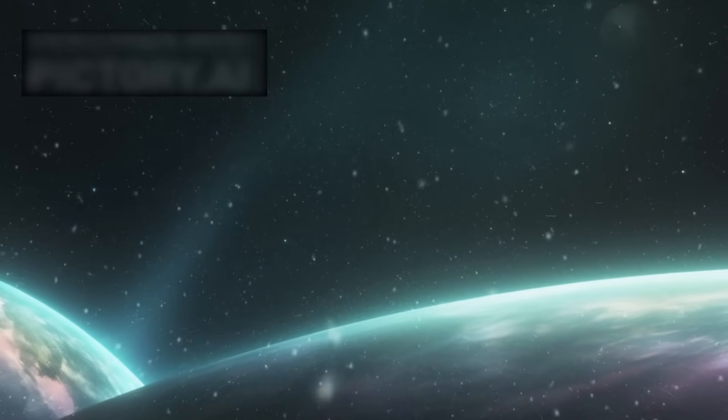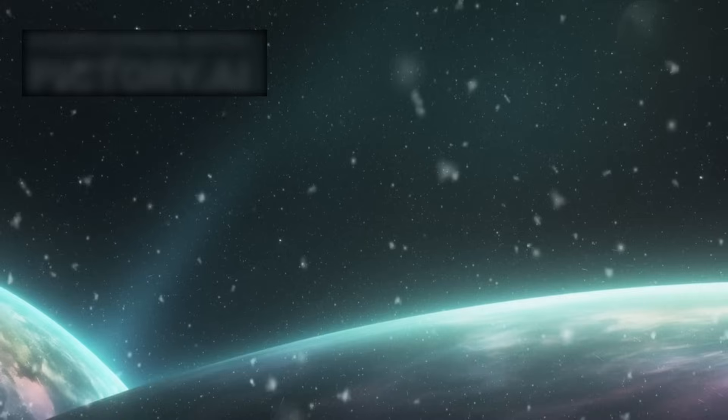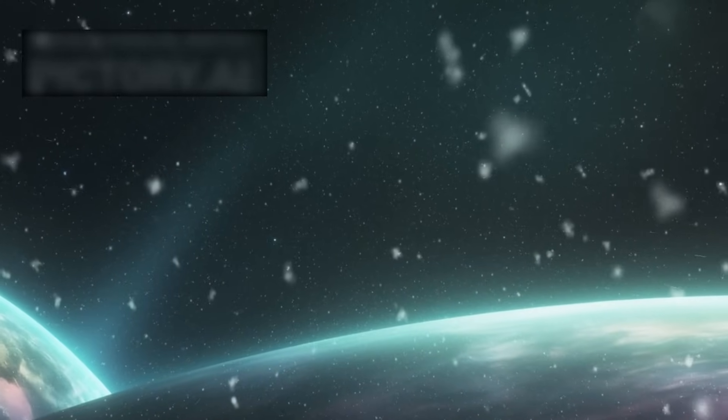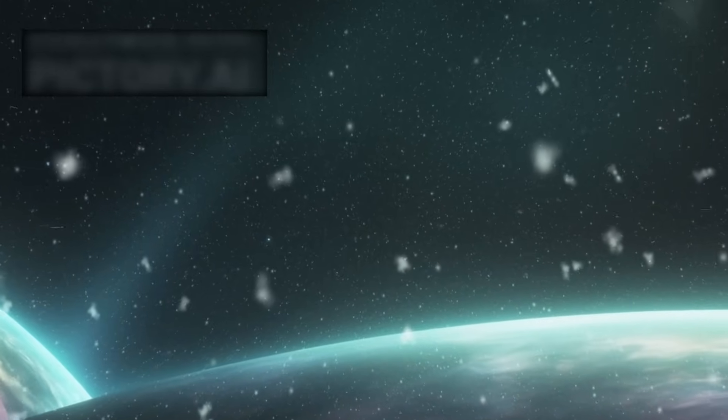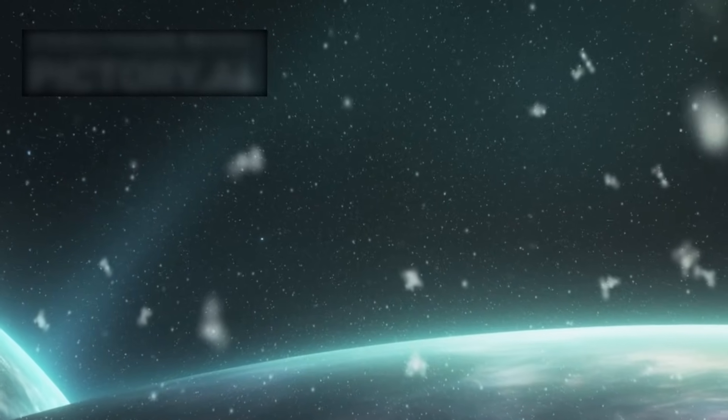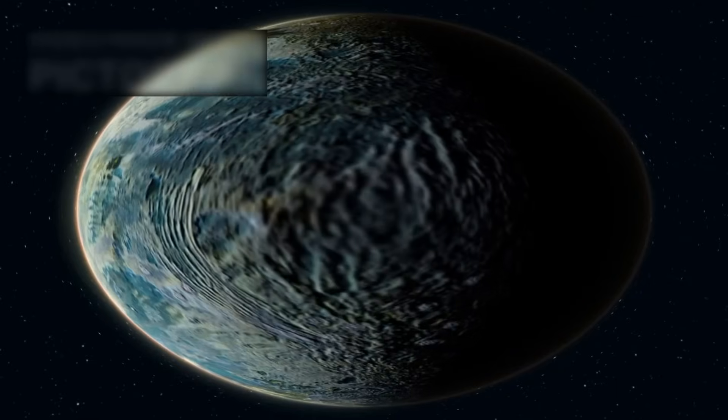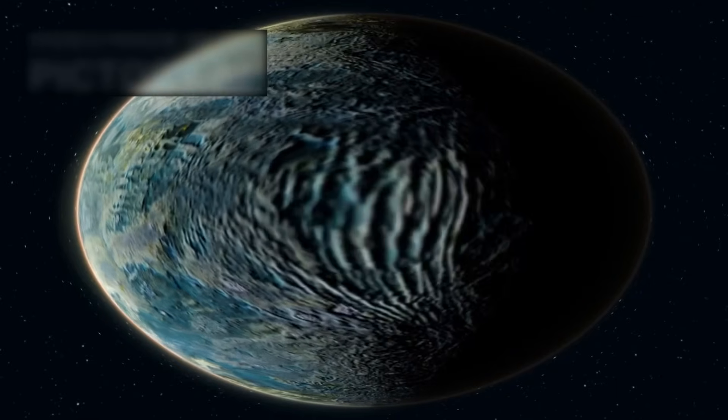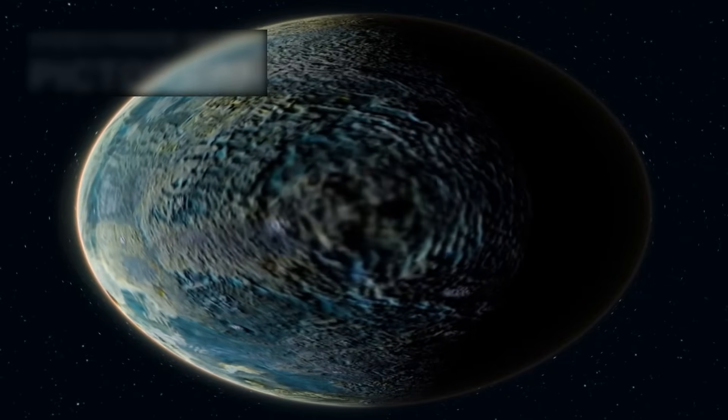Imagine a world not unlike our own, a planet orbiting the nearest star to the Sun, nestled in the system of Proxima Centauri, a mere 4.24 light-years away. This world, Proxima b, has long fascinated astronomers and dreamers alike.